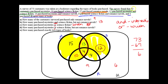Part D: How many purchased mysteries or science fiction but not romance novels? Same two sets as before, however we're not going to count the three regions also contained in the romance novel set. So we're looking at only the 15, 13, and 12, which adds up to 40.